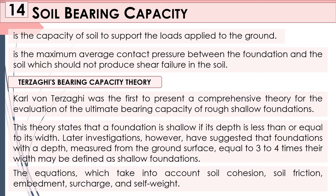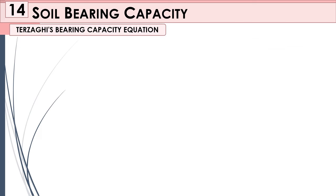The equations take into account your soil cohesion, soil friction, embedment, surcharge, and self-weight. According to Terzaghi's bearing capacity theory, we have lots of formulas to be considered for our general shear failure.